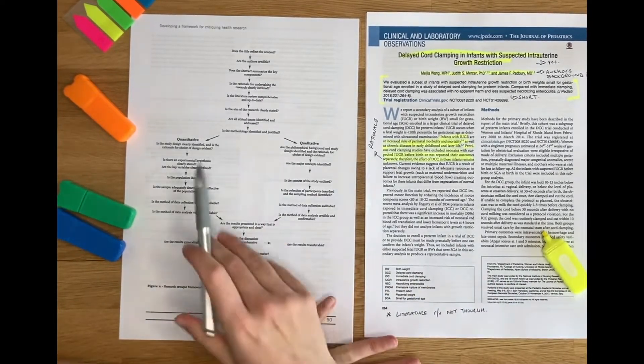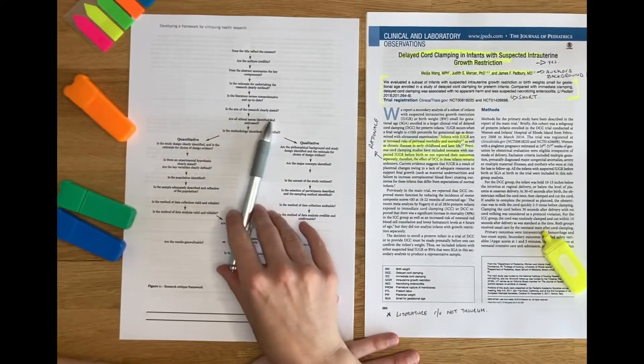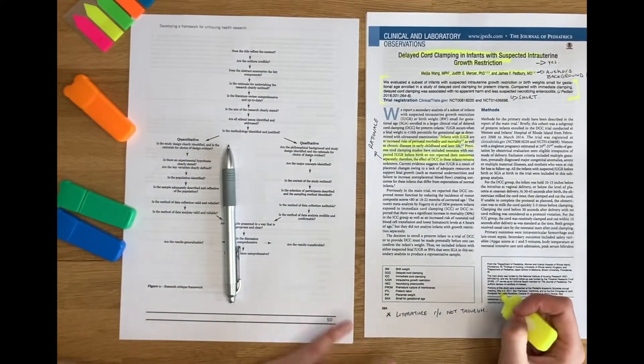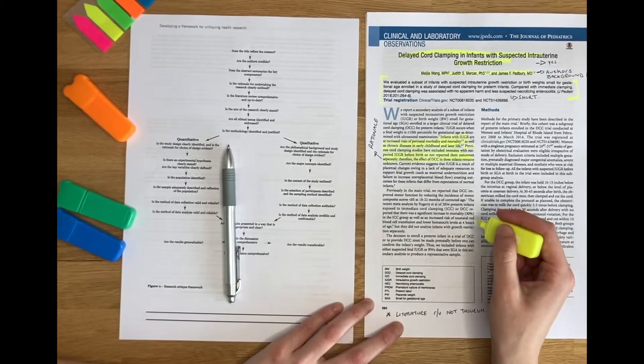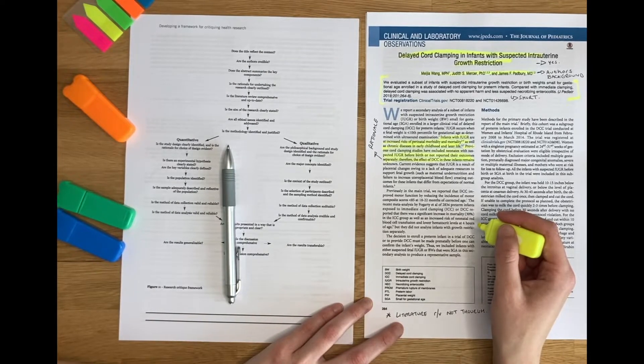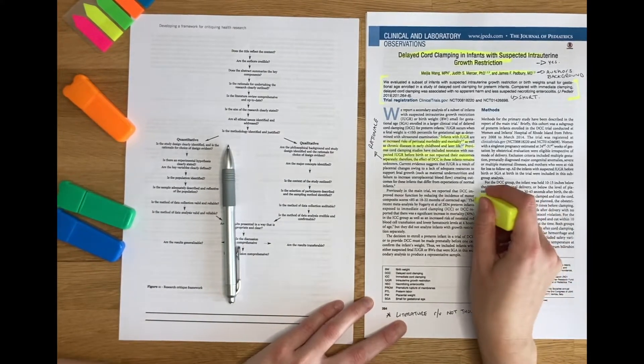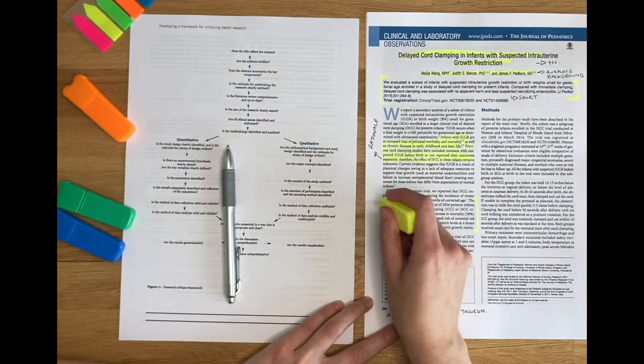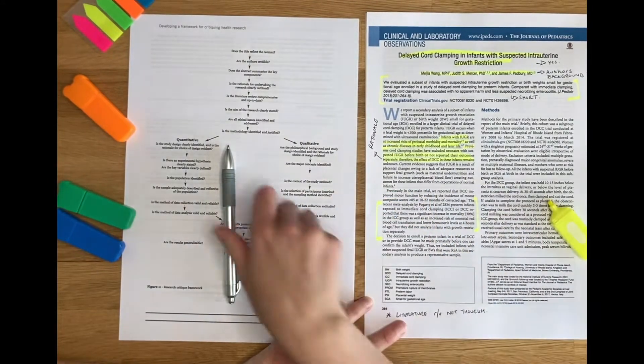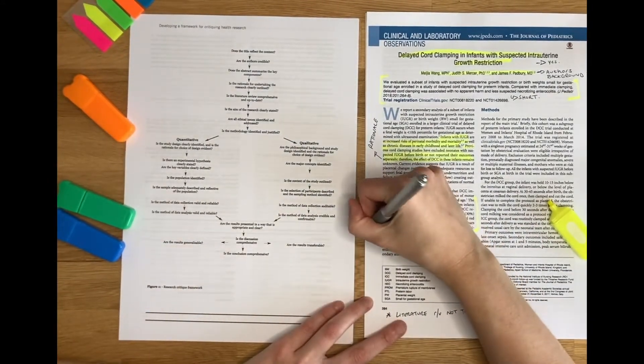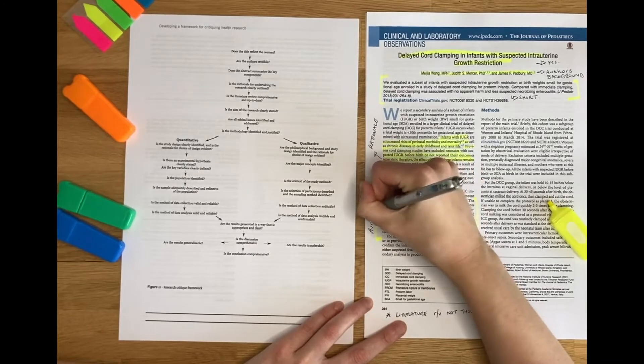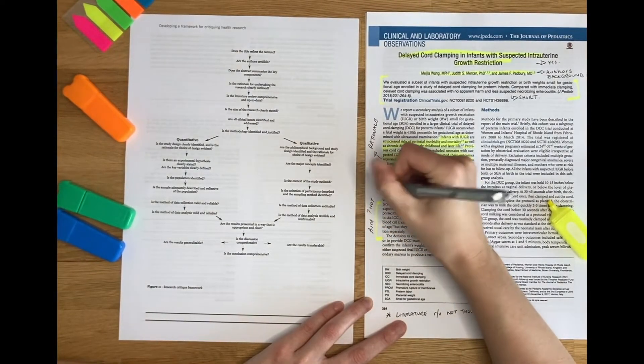And then continue as we do to work our way through the framework. For example, is the aim of the research clearly stated? Now, this has got an aim that you can just about pull out. However, it's not entirely clear what the aim is. So that will be something to include in my critique. And again, I'm going to label this. I'm going to put query not clear.